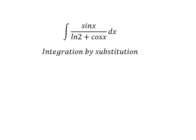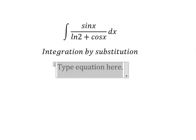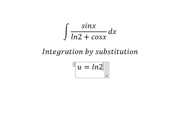So I need to put u equals to ln 2 plus cosine x. Later, we do first derivative for both sides.